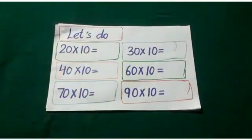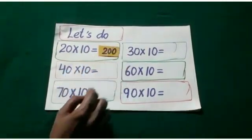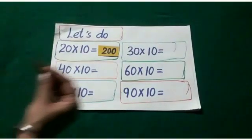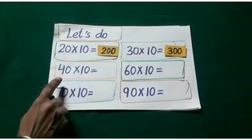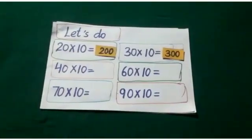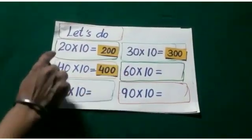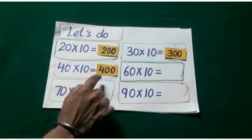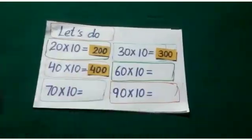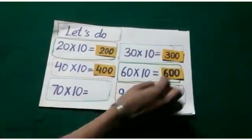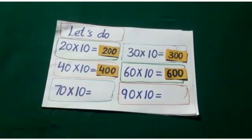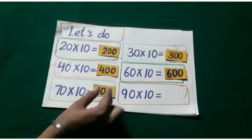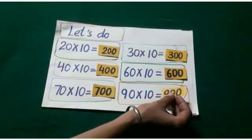Now students, let's do these sums. Our first sum: 20 multiplied by 10 is equal to — yes, students, we have just done it with currency notes — it is equal to 200. Our second sum: 30 multiplied by 10 is equal to 300. Now look carefully: 20 multiplied by 10 is equal to 200, 30 multiplied by 10 is equal to 300. Now, 60 multiplied by 10 is equal to 600. 70 multiplied by 10 is equal to 700. And 90 multiplied by 10 is equal to 900.